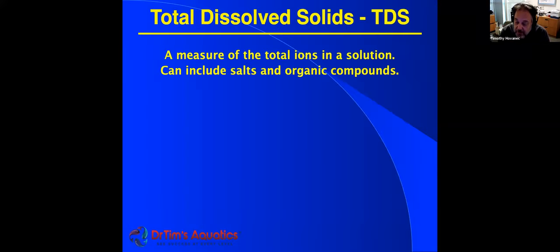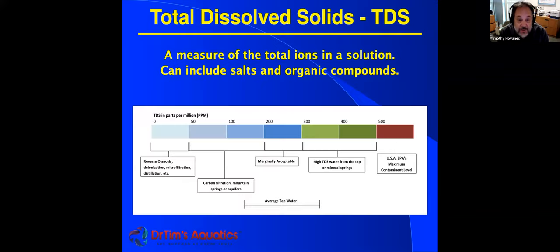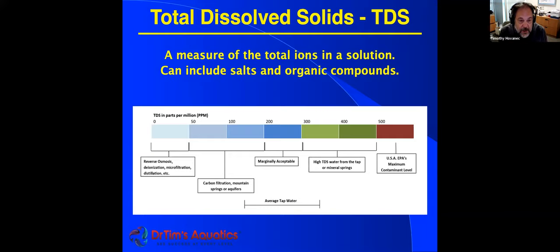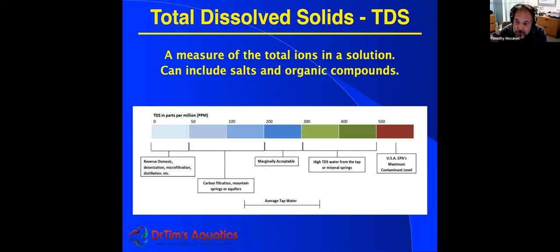Next is total dissolved solids. When you look at the water, you can't tell what's in it. Total dissolved solids gives you a quick snapshot of the total ions — everything besides the H2O itself. Salts, organic compounds, urea, ammonia — all these things are basically some type of salt or compound that increase the total dissolved solids. When you hear terms like RO (reverse osmosis) or DI (deionization), that's where you've taken the water and passed it through something to remove all these salts and organic compounds to make absolutely pure water.